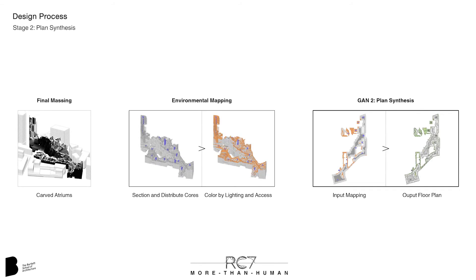The second stage of the design process is the plan synthesis. The massing is sectioned to create floor plates, which are then color-coded with environmental data and input into our pre-trained GAN.